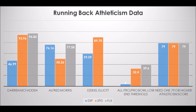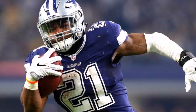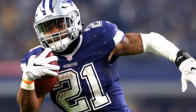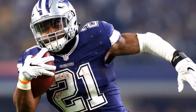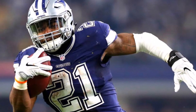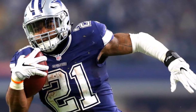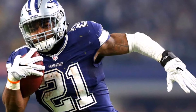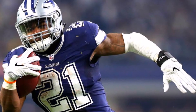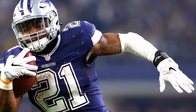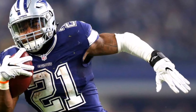Ezekiel Elliott had a 59.59 explosiveness score for his size, with an 89.70 speed score for his size. He did not participate in the flexibility tests, which was a bit disappointing, but he did hit at least an elite athleticism score in terms of his speed. When you look at the Cowboys running backs from an athleticism standpoint, they like a lot of things — they like speed. Alfred Morris is not necessarily a speed back, but all these backs have above-average athleticism in some form, and two of them hit elite levels in that athleticism metric.